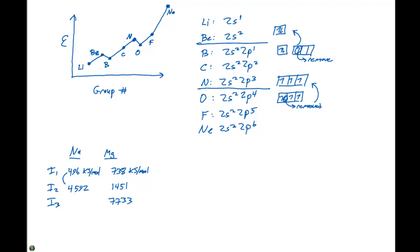So here for sodium, we see a large jump from the first to the second ionization energy. Whereas magnesium, we see a large jump from the second to the third ionization energy.